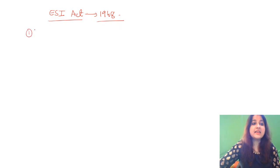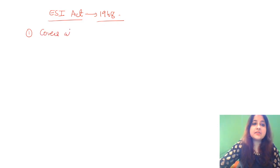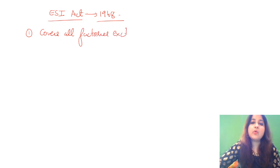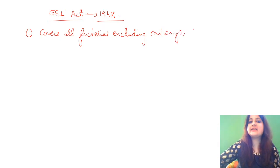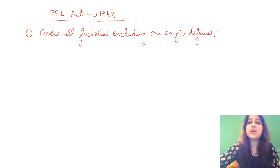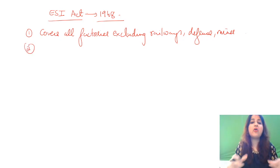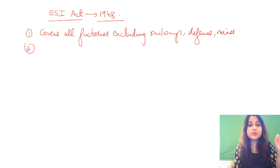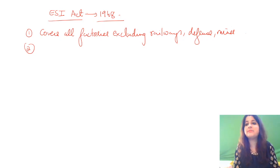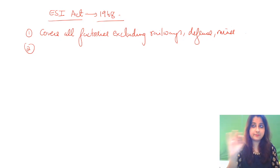The next MCQ commonly asked is: ESI Act covers all factories, excluding which? It does not cover railways, it does not cover defense, and it does not cover mines. The rest — hotels, newspaper establishments, restaurants — it covers everything. So it covers all factories, excluding railways, defense, and mines. This is a very important MCQ that can come.